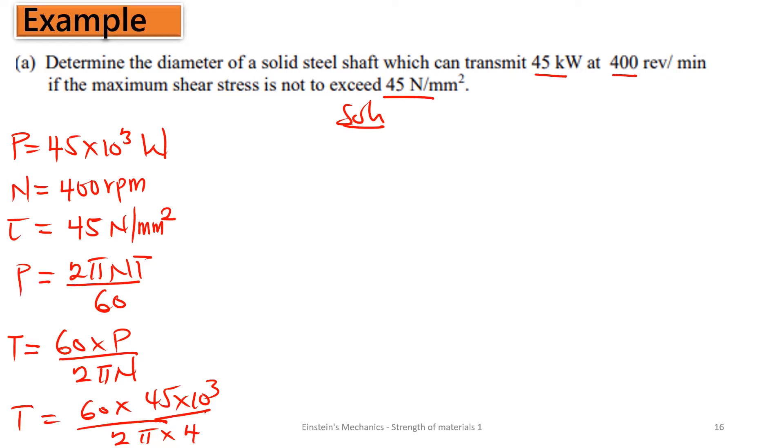From here, we can make torque the subject and find the torque transmitted or the torque on the shaft. This is 60 multiplying the power transmitted divided by 2 pi N. So my torque is 60 multiplying 45 everything divided by 2 pi and our N is 400.